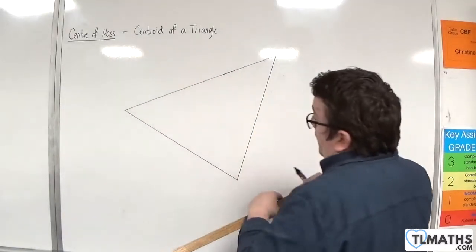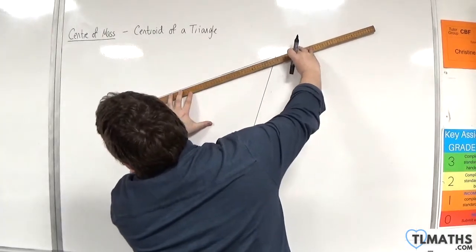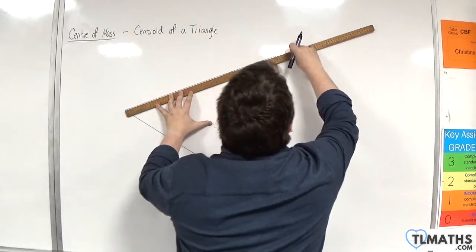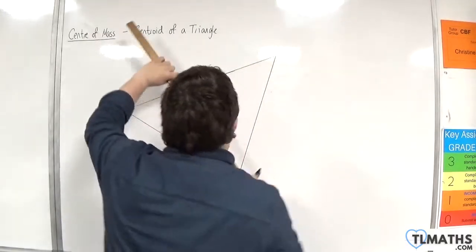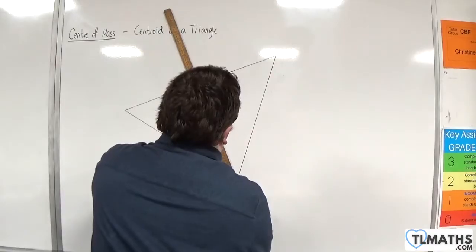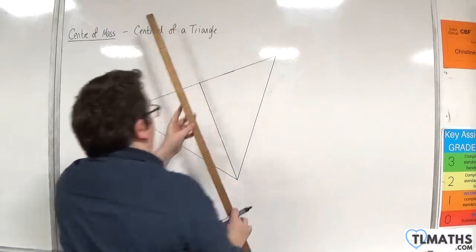So I'm going to try and draw this reasonably accurately. So we have a side here of 60 centimeters, so 30 centimeters, and it should go through that vertex. So that is a median.